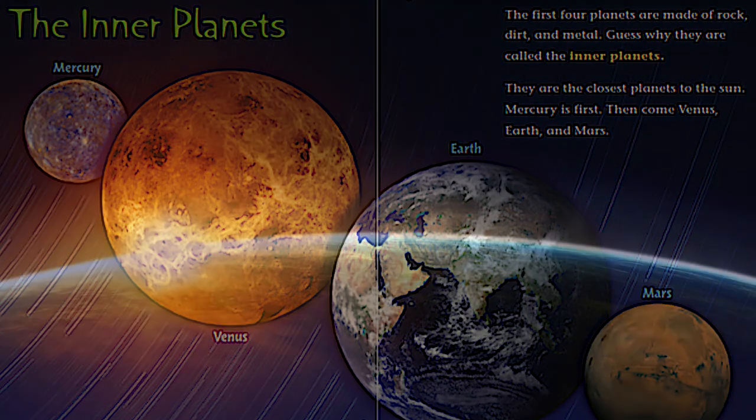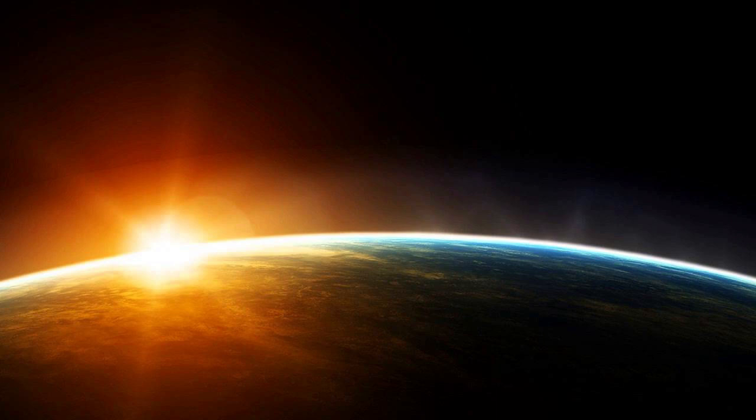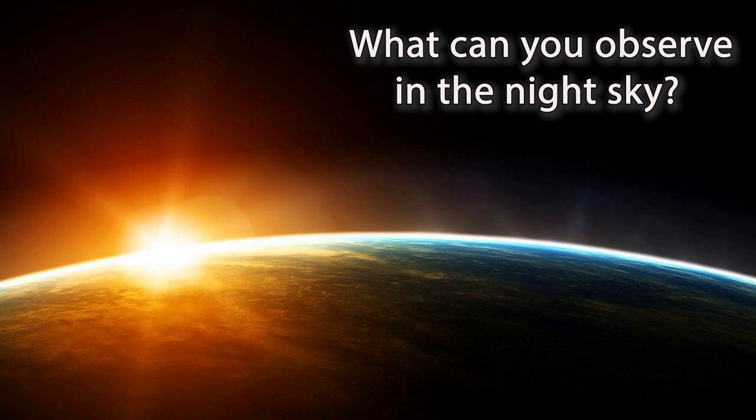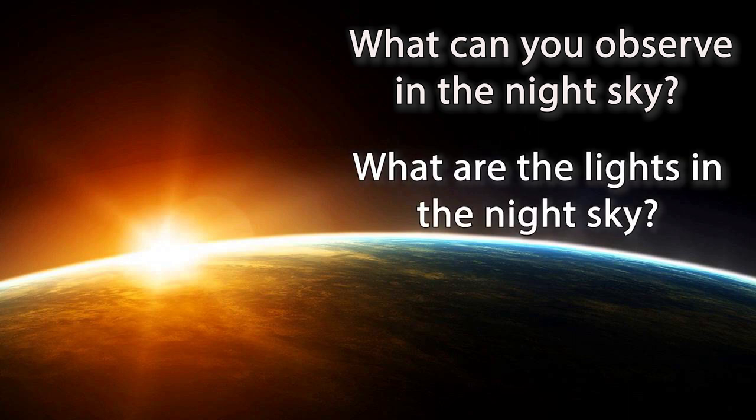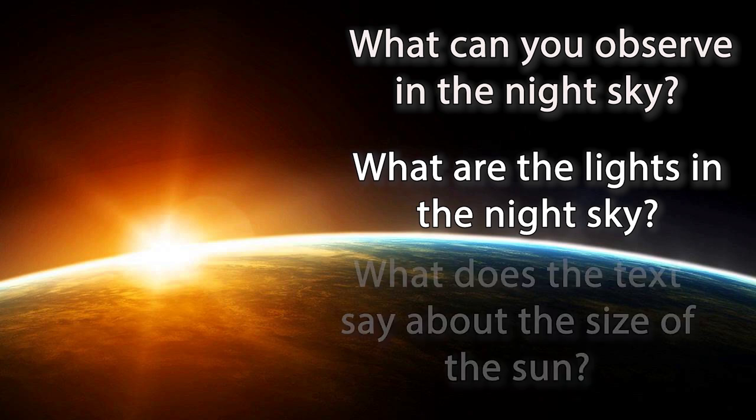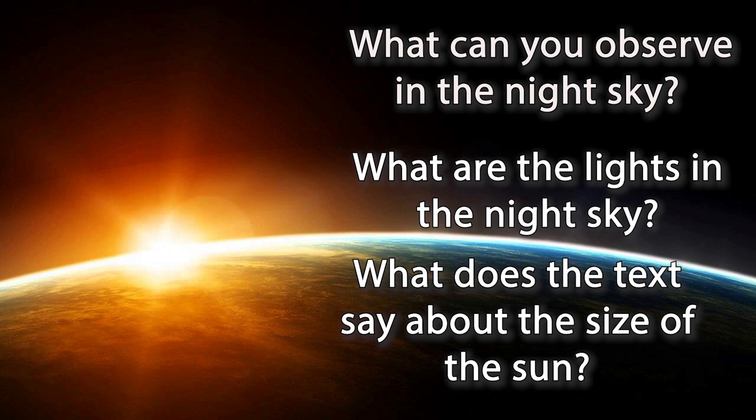So for today's reading, here are three questions for you to answer. First one is, what can you observe in the night sky? The second one is, what are the lights in the night sky? And the third question is, what does the text say about the size of the sun?